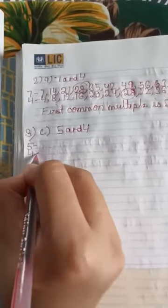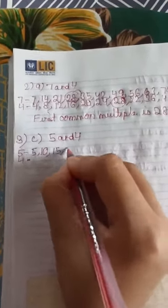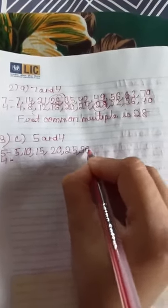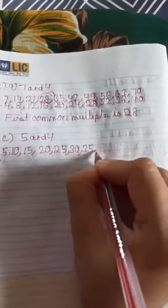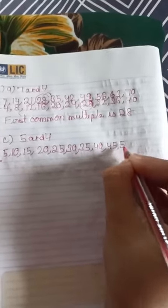Now first of all we have to write the table of 5: 5×1 is 5, 5×2 is 10, 5×3 is 15, 5×4 is 20, 5×5 is 25, 5×6 is 30, 5×7 is 35, 5×8 is 40, 5×9 is 45, 5×10 is 50.